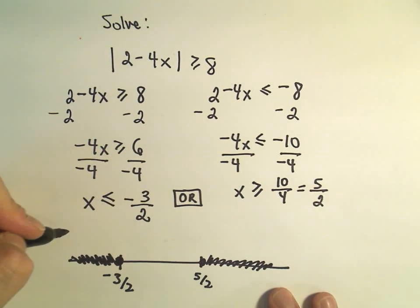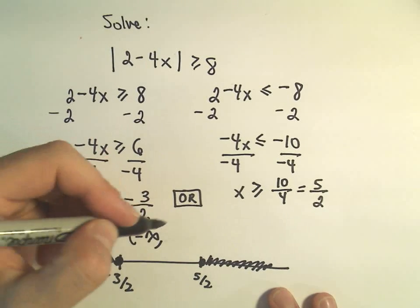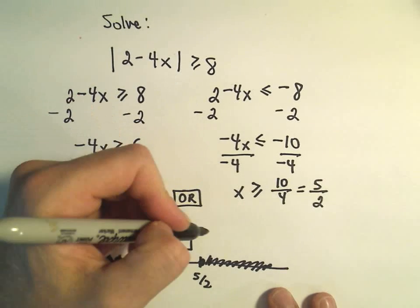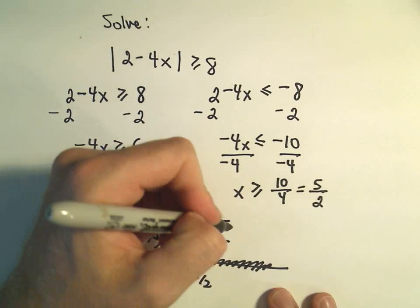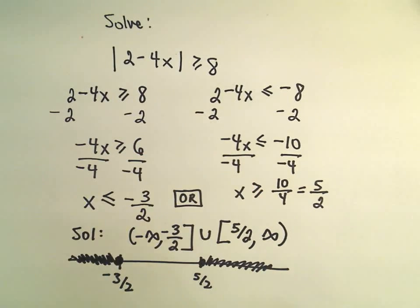So if we want to write our solution in interval notation, we can say it's from negative infinity up to negative 3 halves, inclusive, so we use our brackets. Or we can use brackets, 5 halves, up to positive infinity.